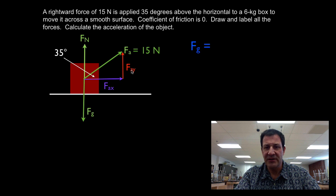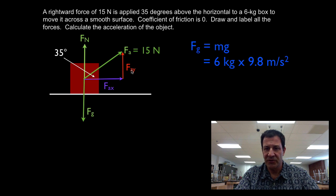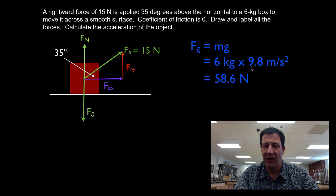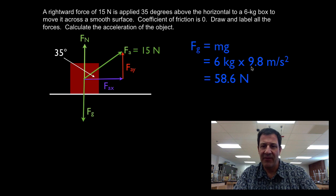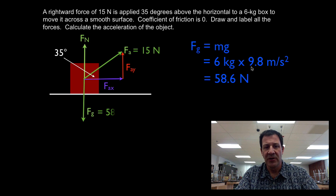The first thing to do is calculate the gravitational force, because it's always FG equals MG. The gravitational force is the mass of the object times the acceleration due to gravity, which is 9.8 meters per second squared on Earth, giving us a weight of 58.6 Newtons.